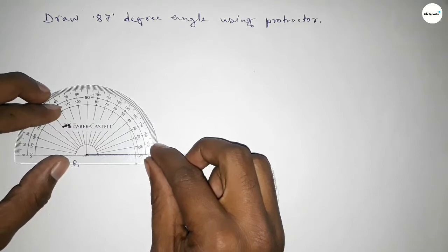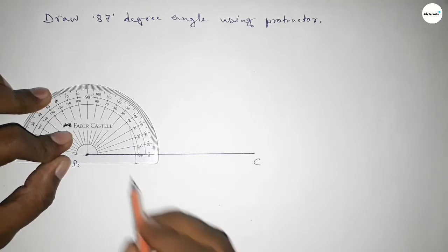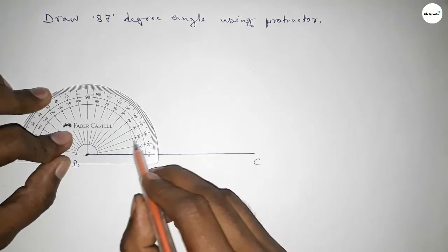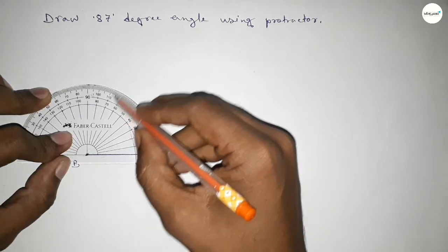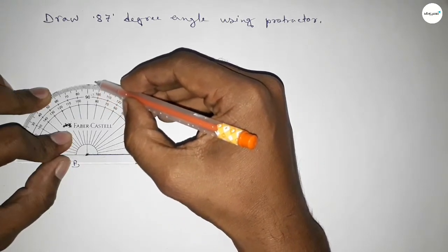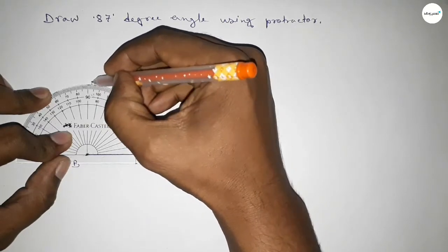Then counting the angles. This is starting at zero: 10, 20, 30, 40, 50, 60, 70, 80, 85, 86, and this is 87. So this is 87 degrees.